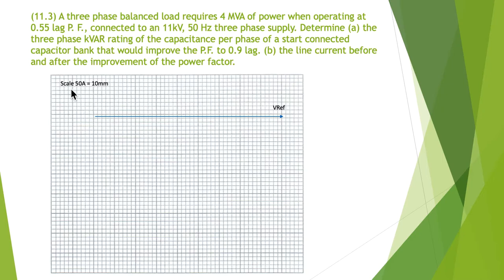You can see here I've simply said our scale is 50 amps equals 10 millimeters. Because we're dealing with currents, our reference is the voltage. The first thing I'm going to do is put in that 40 MVA at 0.55 power factor.